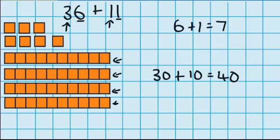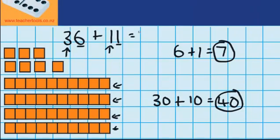Perfect. So now we've added all the 10's together and we've got 40. We added all the 1's together and we've got 7. So now we just need to combine these two numbers: 40 plus 7 equals 47. So 36 plus 11 equals 47.